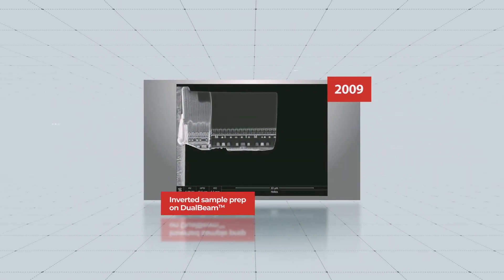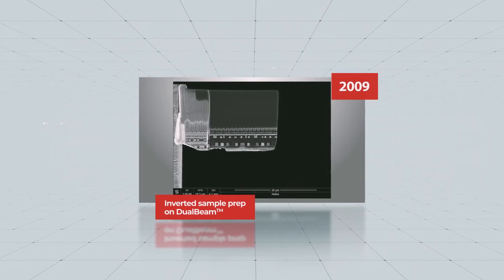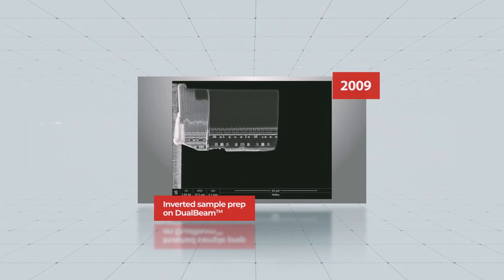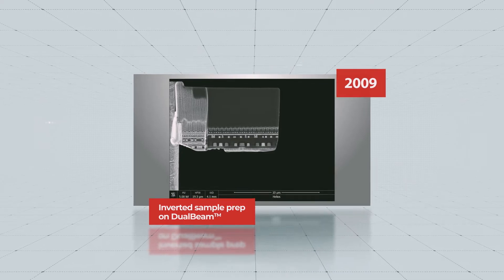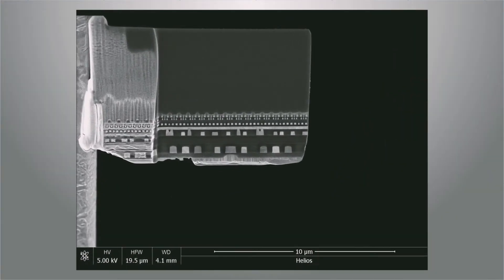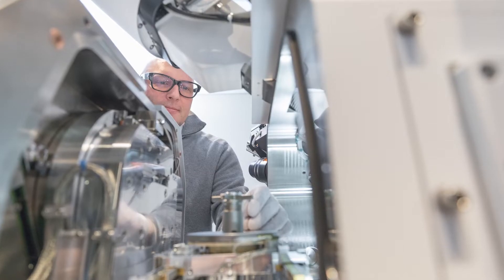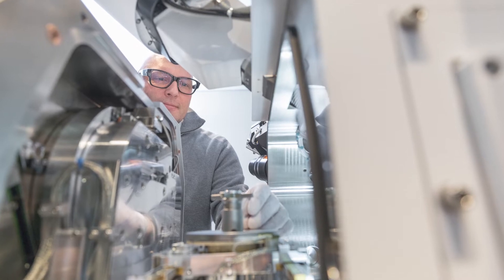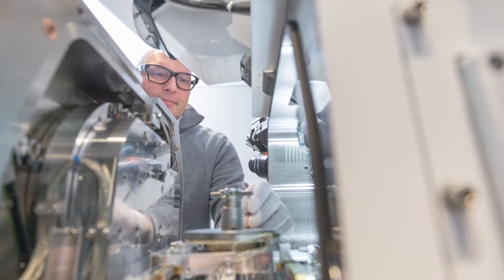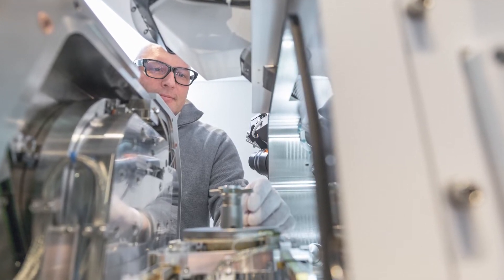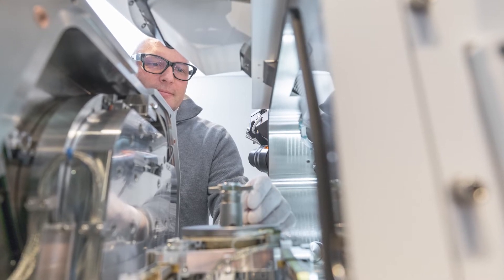In 2009, inverted sample preparations started to be used regularly by dual beam instruments to mitigate the curtaining effect during sample preparation. Thermo Fisher Scientific application specialists were at the forefront in developing novel ways to improve TEM samples using site-specific TEM sample preparation with the FIB.